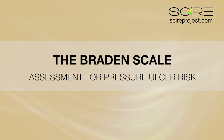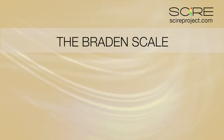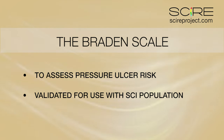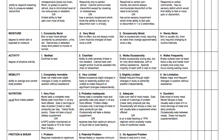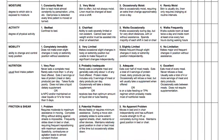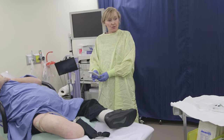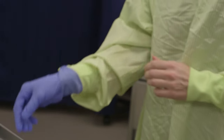The Braden scale is used for assessing the risk of developing pressure ulcers. Reduced activity and prolonged bed rest that often accompany spinal cord injury can lead to development of pressure ulcers. The Braden scale is widely used and has been validated for use with people with spinal cord injuries. Use of a pressure ulcer risk tool is an element of best clinical practice and is required for full accreditation in many hospital systems. Ongoing assessment improves the accuracy and predictive ability of the Braden scale.